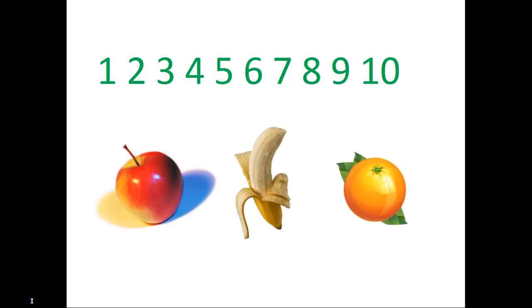Let's say we have a list of numbers from 1 through 10, and a list of fruits. An apple, a banana, and an orange. How many ways could we choose a number and then a fruit?